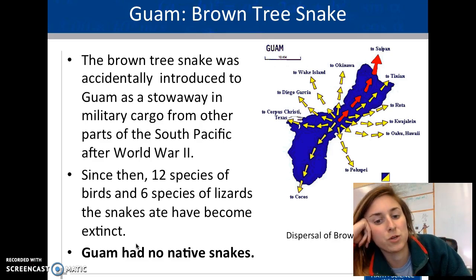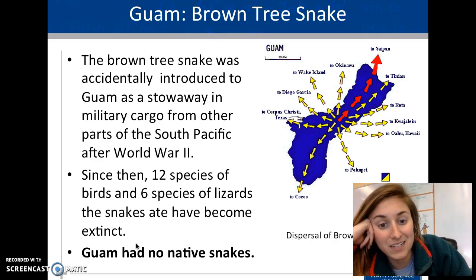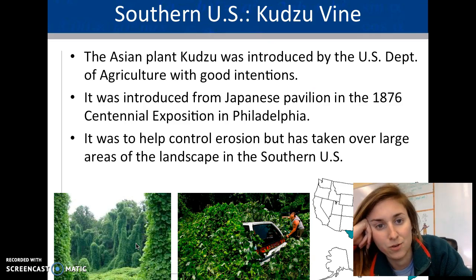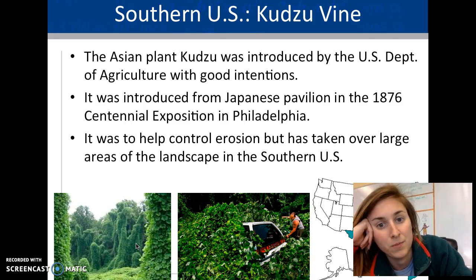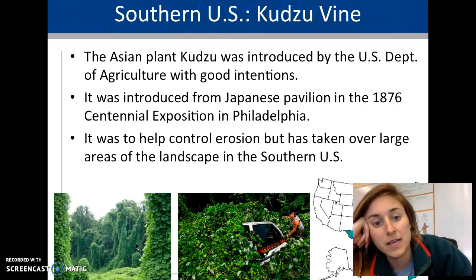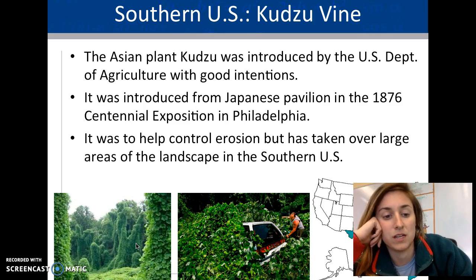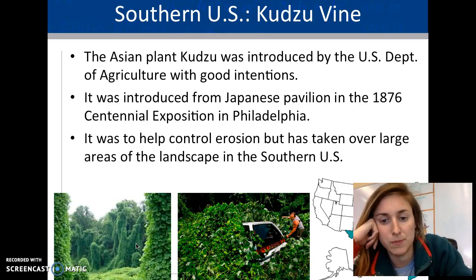An example is the Guam tree snake. Guam has no native snakes, and basically they introduced the snake and it killed a bunch of things, so we saw the distribution of the snake vastly increased while other organisms died. Another example is the kudzu vine. This plant was introduced to the U.S. with good intentions — it was trying to help control erosion because the roots grew really deep. But it grows everywhere and is basically taking over large parts of the southern U.S., like Arkansas where it covers buildings.